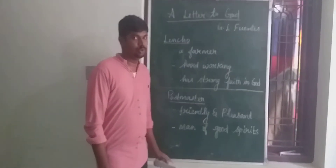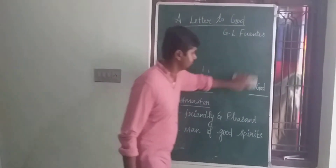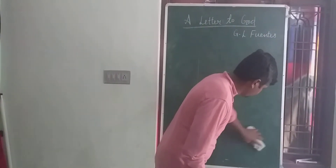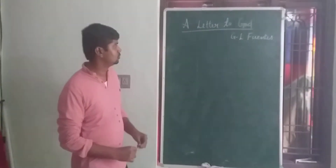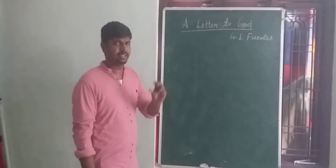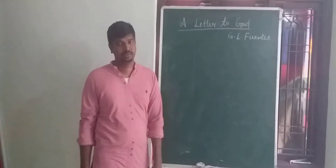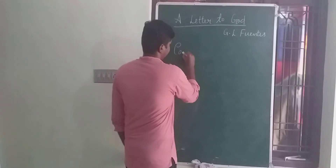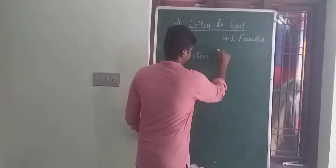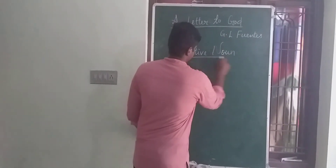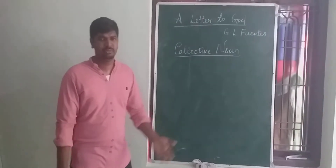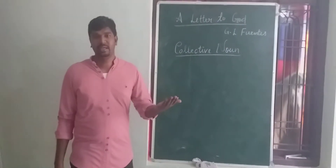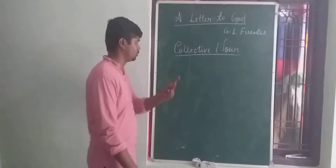Next, we should see a few more grammar items here. The writer has used a few collective nouns. You might have already studied in your lower classes what a collective noun is. A few collective nouns are used here, like a bunch of keys, a bunch of grapes, and a crew of sailors. Here also two collective nouns are used.